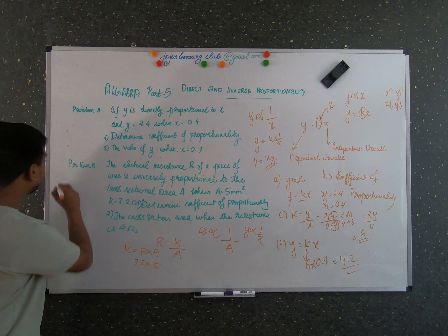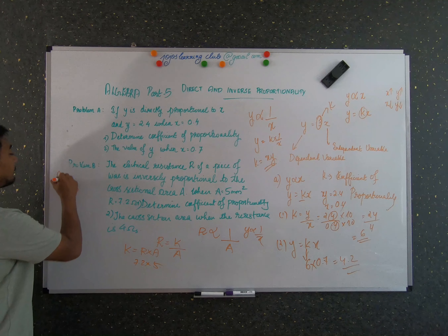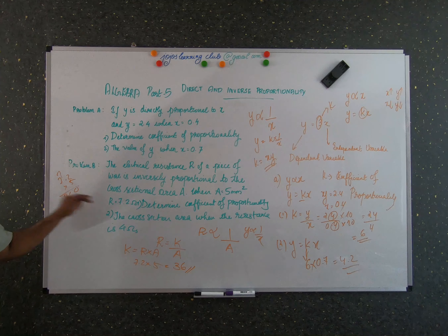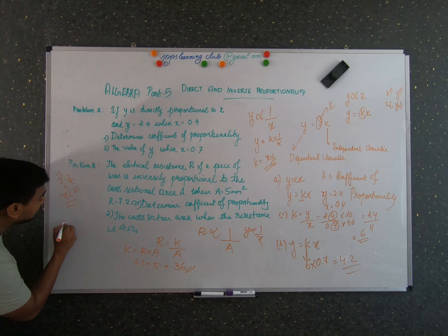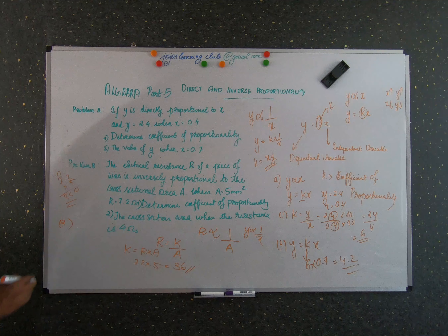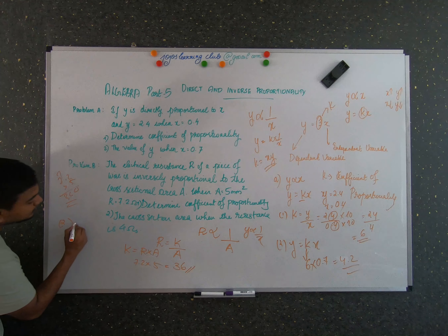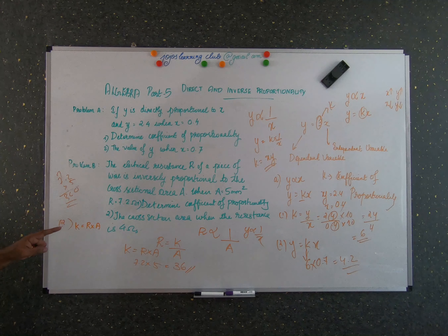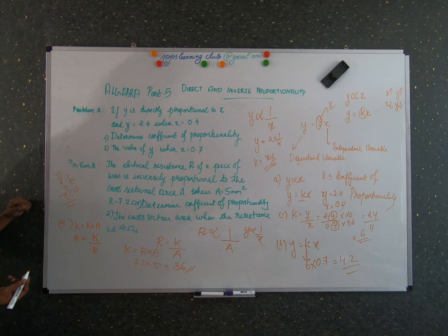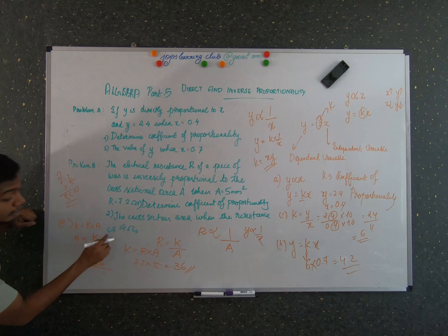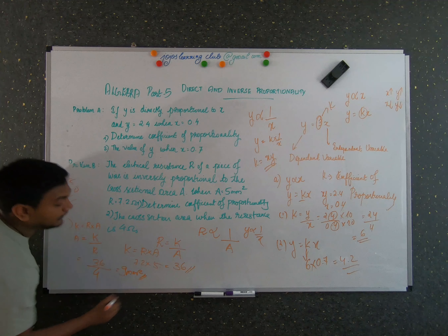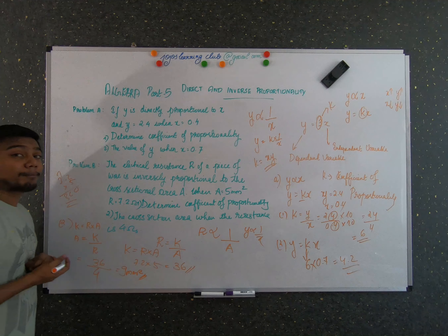To find k, we multiply 7.2 by 5: 7.2 into 5 gives us 36. So the coefficient of proportionality is 36. For the second part of problem B, we need to find the cross-sectional area when the resistance is 4 ohms. From the formula k is equal to R times a, the cross-sectional area a is equal to k divided by R, which is 36 divided by 4, giving us 9 millimeters squared.